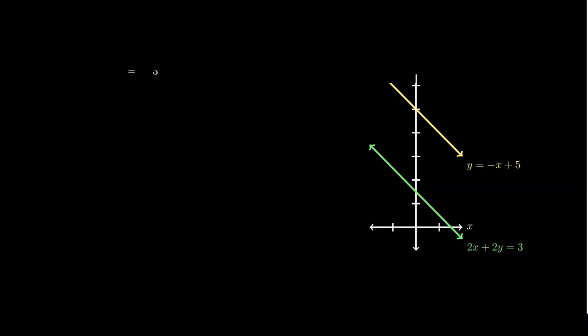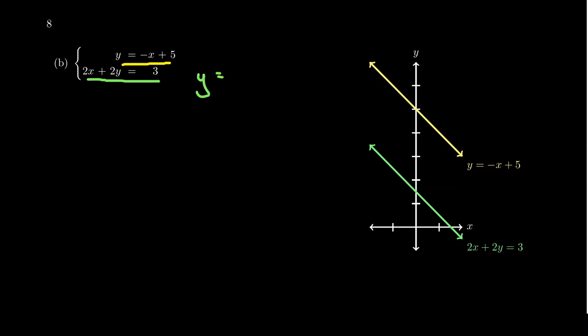As another example, take the system y = −x + 5 and 2x + 2y = 3. The first equation is already in slope-intercept form: y-intercept 5, slope −1. A linear system doesn't require all equations to have variables on the left and constants on the right, though that form is generally preferred. The second equation, rearranged, gives y = −x + 3/2, with y-intercept 3/2 and slope −1 as well.